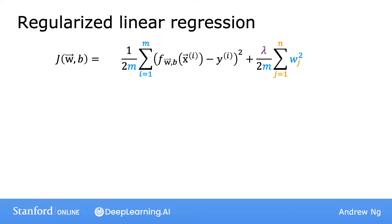Here's a cost function we've come up with in the last video for regularized linear regression. The first part is the usual squared error cost function. And now you have this additional regularization term, where lambda is the regularization parameter. And you'd like to find parameters w and b that minimize the regularized cost function.